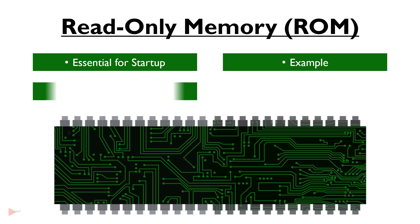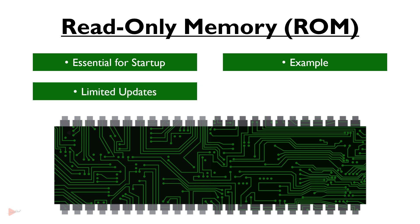Limited updates: While ROM is permanent, some types of ROM can be updated under specific conditions. For instance, EEPROM, or electrically erasable programmable read-only memory, allows for occasional updates through electrical signals. However, this process is typically more complex than updating regular computer memory.